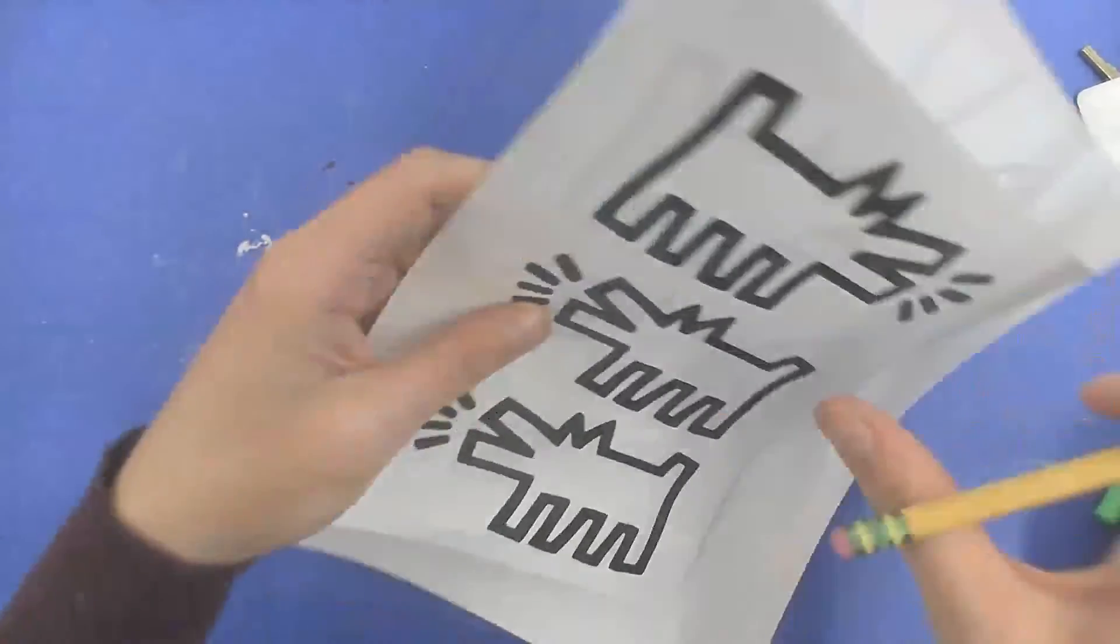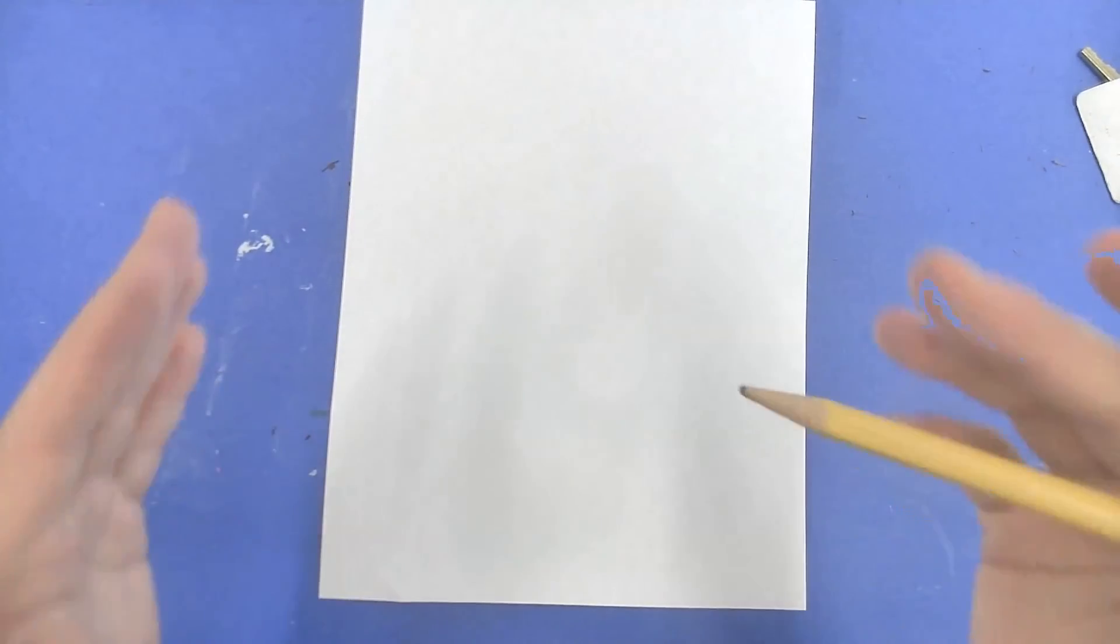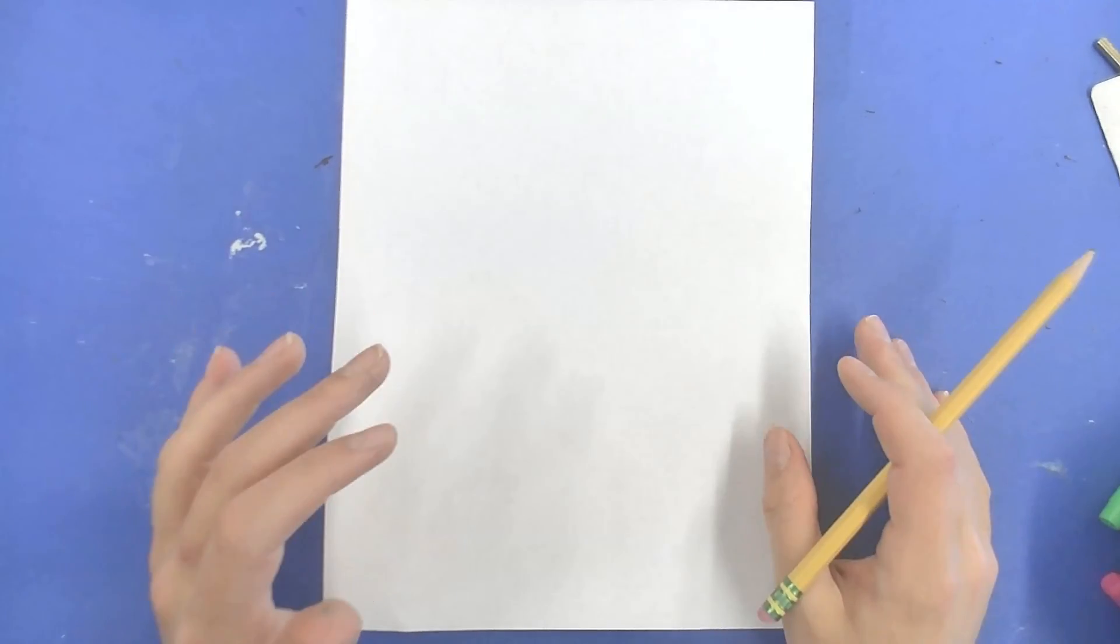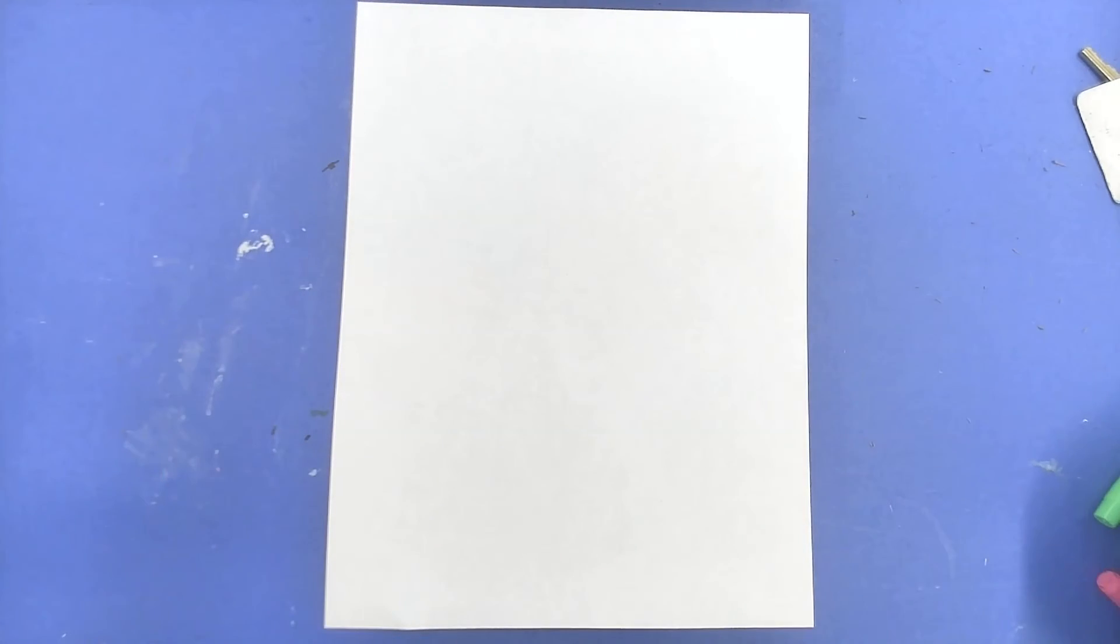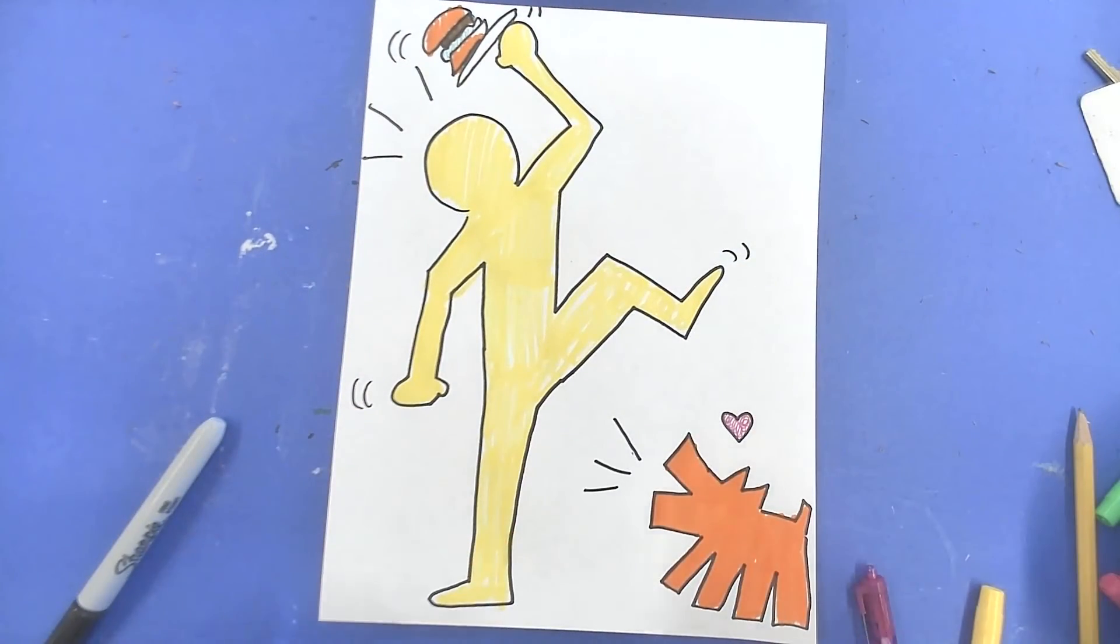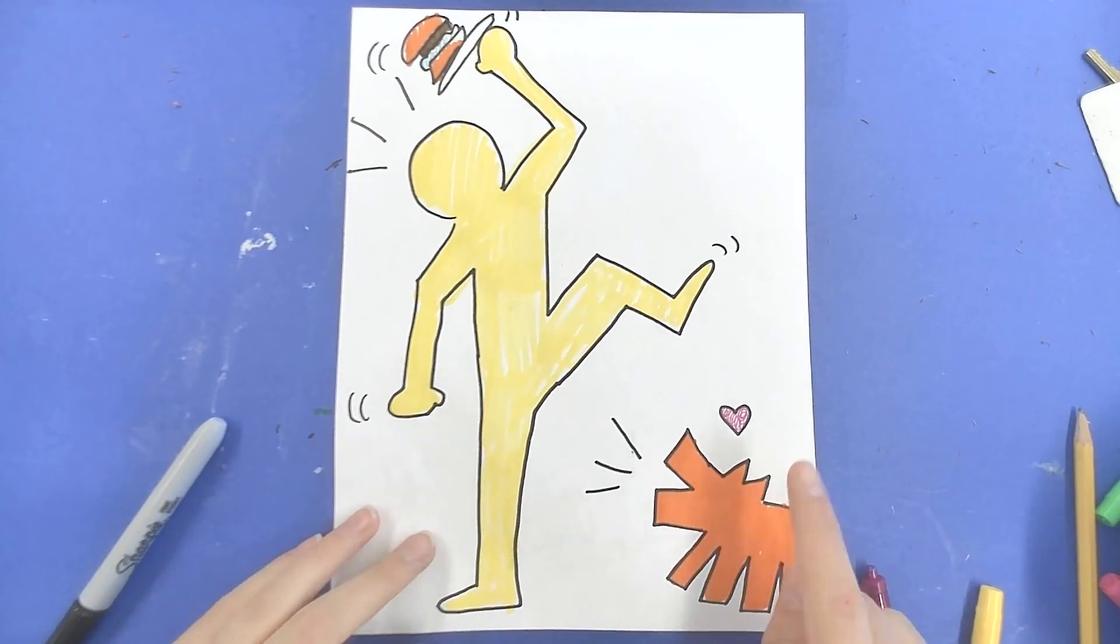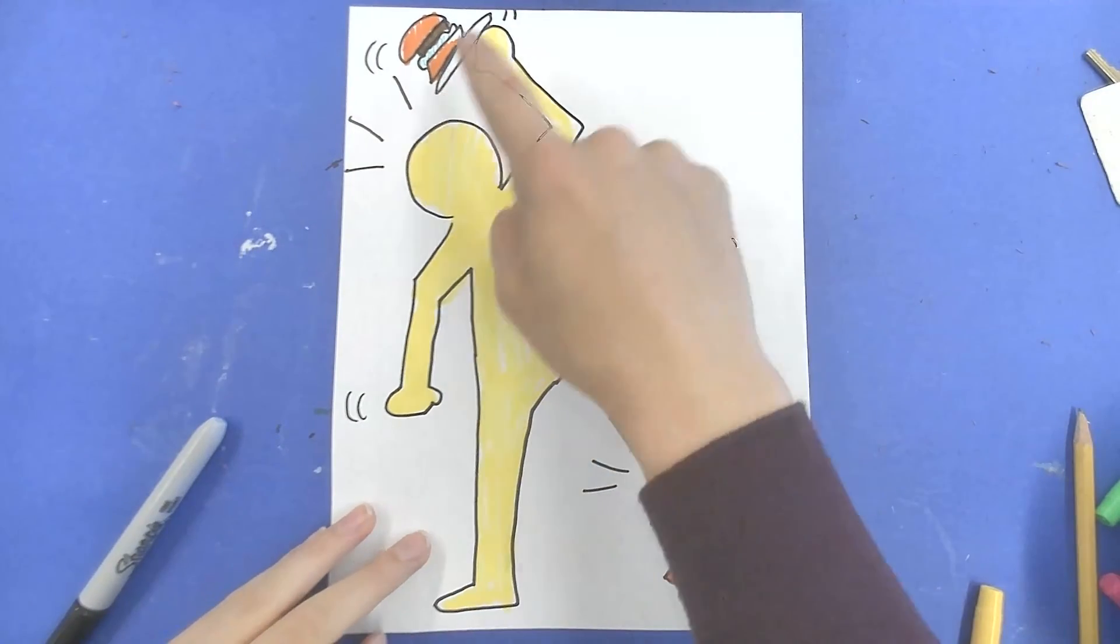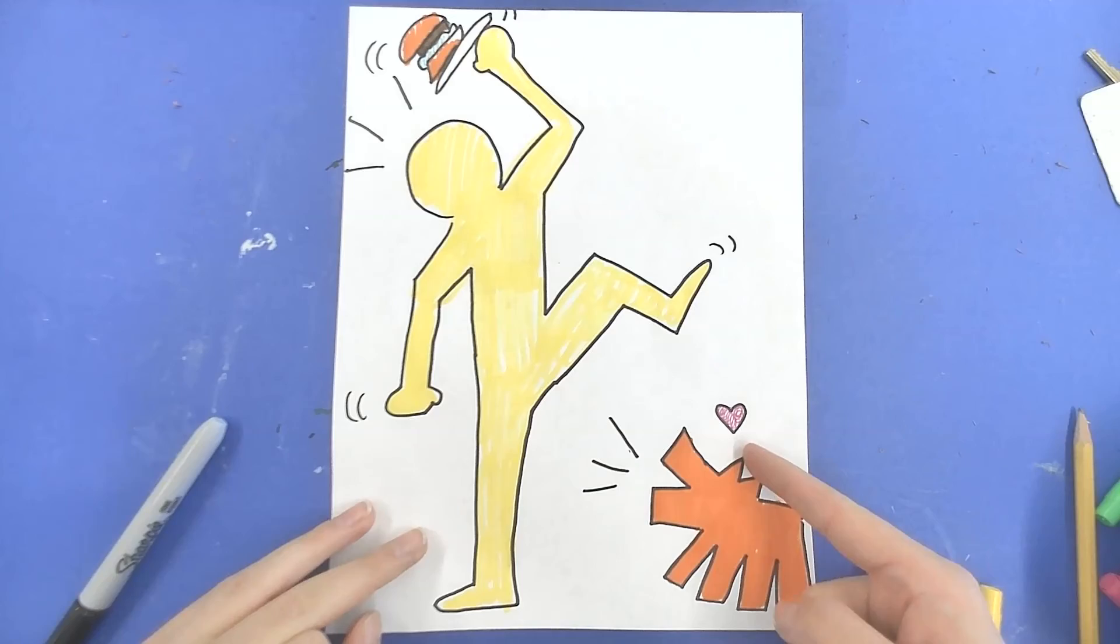So your project for today, now that you've learned how to draw both styles, is give me a Keith Haring person and a dog doing something. For example, something like this. Now I'm telling a story without any words. The dog wants the hamburger. Dog barks at the guy. Guy drops the hamburger. Dog's really happy.